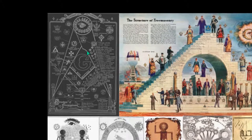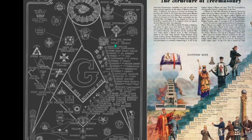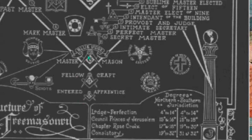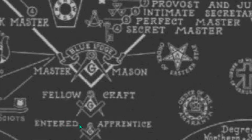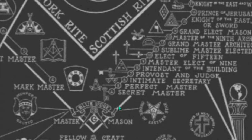Now introducing Freemasonry. Let's look at the structure. This is showing you the Scottish Rite of Freemasonry. There are two rites: the Scottish Rite and the York Rite. You see the compass and square in this chart, and the Eye of Lucifer at the top. You see the three lodges — the Blue Lodge — with three entering degrees: Entered Apprentice, Fellow Craft, and Master Mason. At that point you can split off into the Scottish Rite or the York Rite.